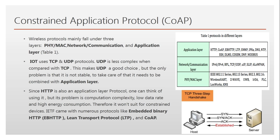If you look at the TCP/IPv6 protocol stack, we have the application layer just above the transport layer. In the transport layer we have protocols like TCP and UDP. IoT uses them both, but it is much more comfortable with UDP. TCP and UDP are different: UDP is connectionless whereas TCP is connection-oriented. UDP doesn't care that much about reliability, whereas TCP is designed specifically for reliability.